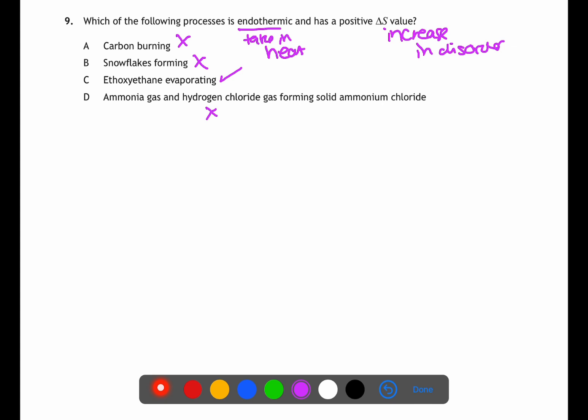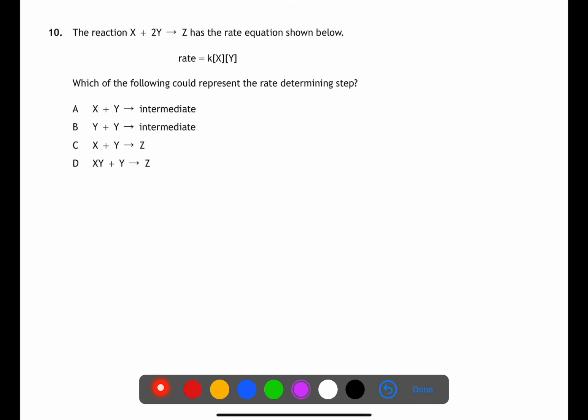In question 10 we're looking to find an equation for the rate determining step. If you look at the rate equation this will show you what is involved in the rate determining step. Here we would have one molecule of X plus one molecule of Y as they are both raised to the power one in the rate equation. This will then form an intermediate as we still have another molecule of Y to use for the overall reaction.